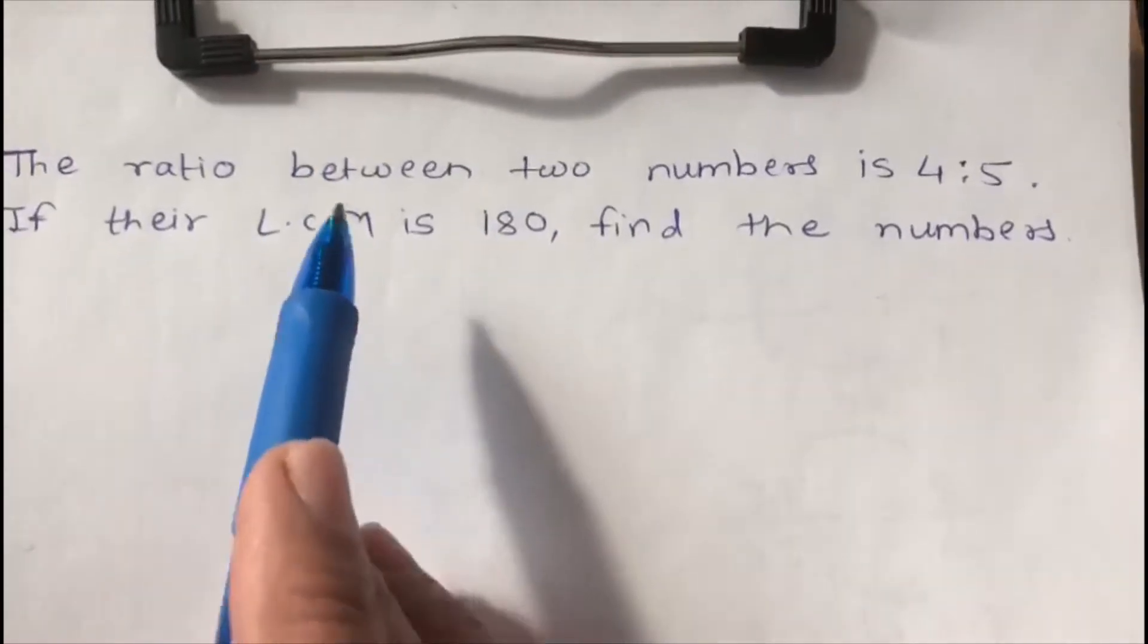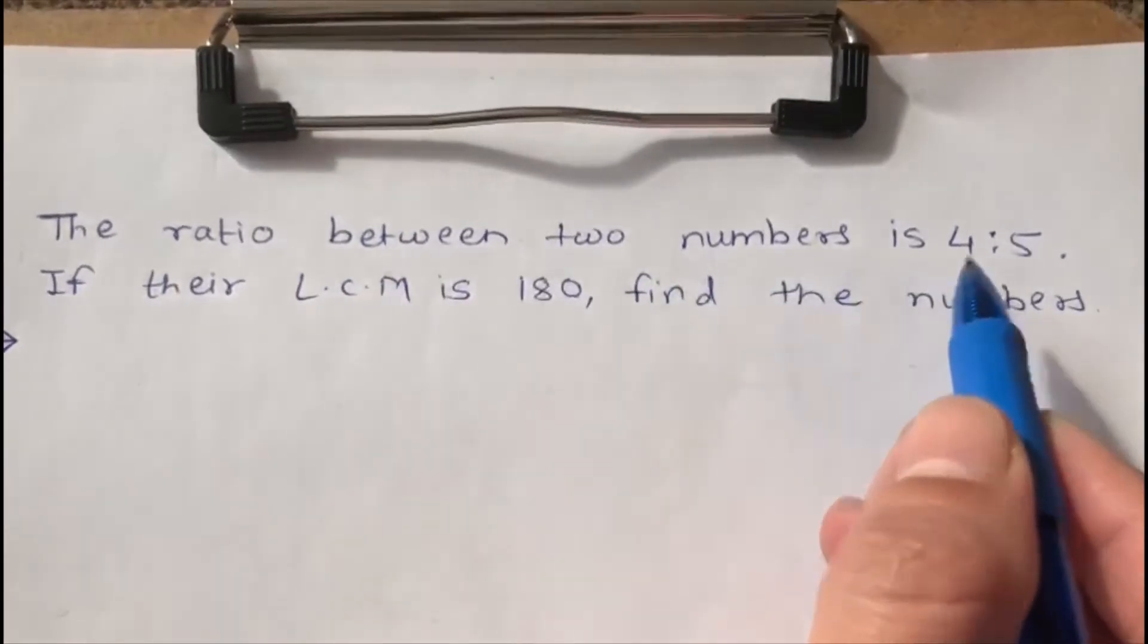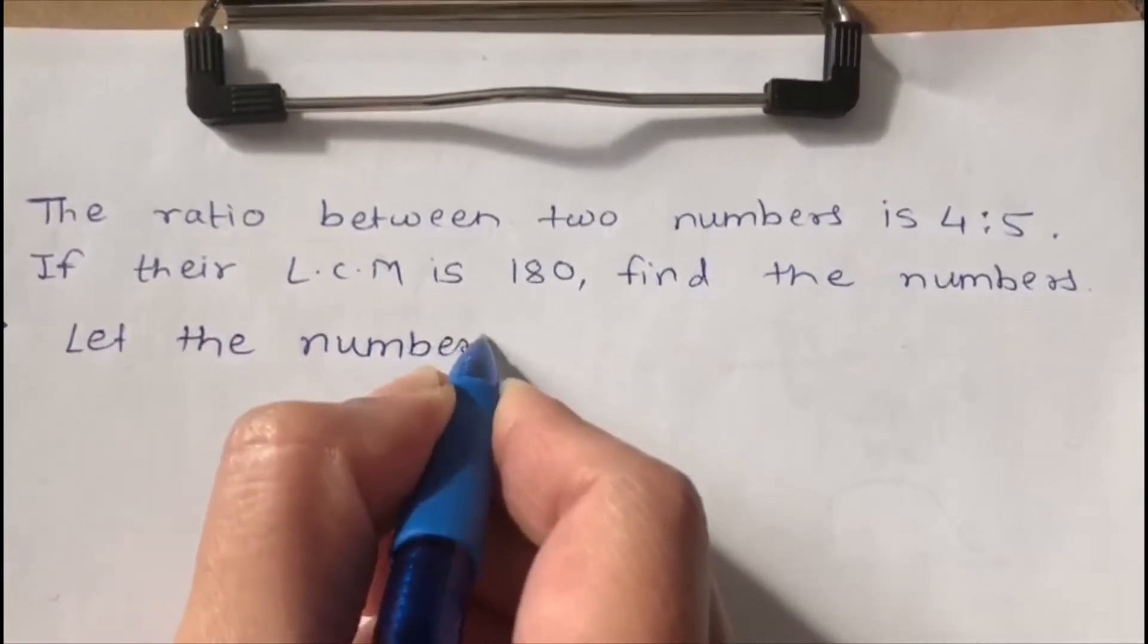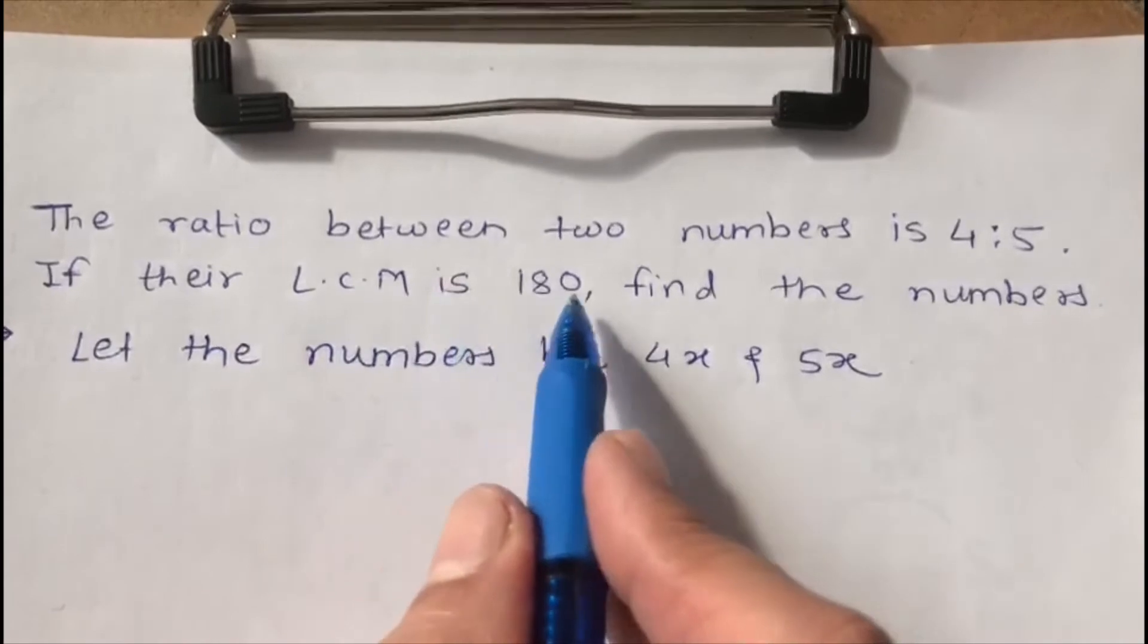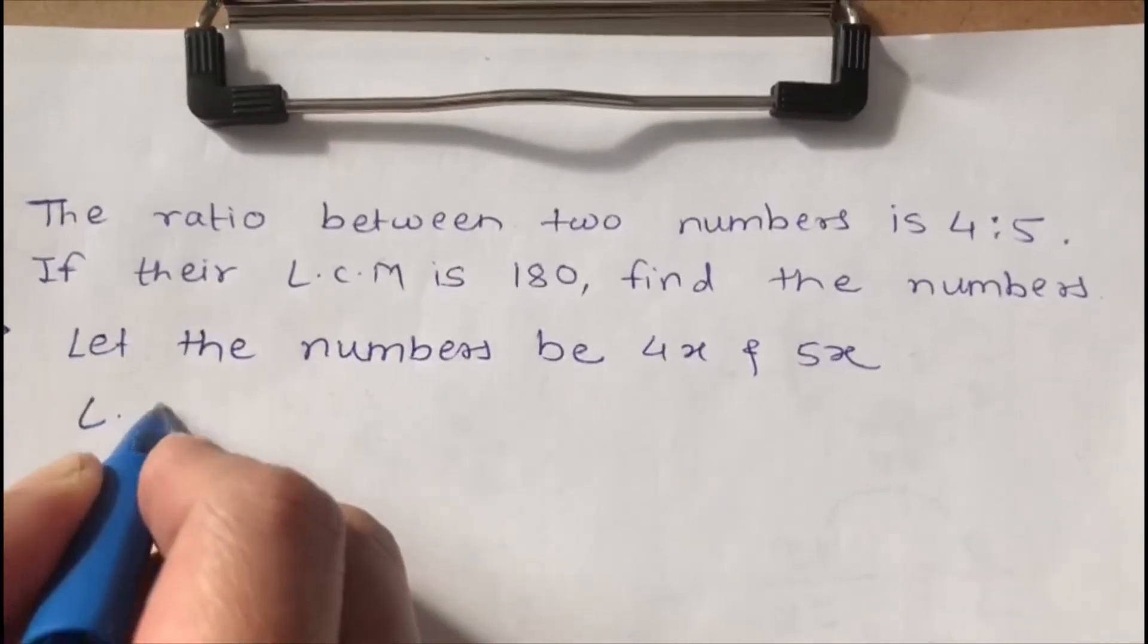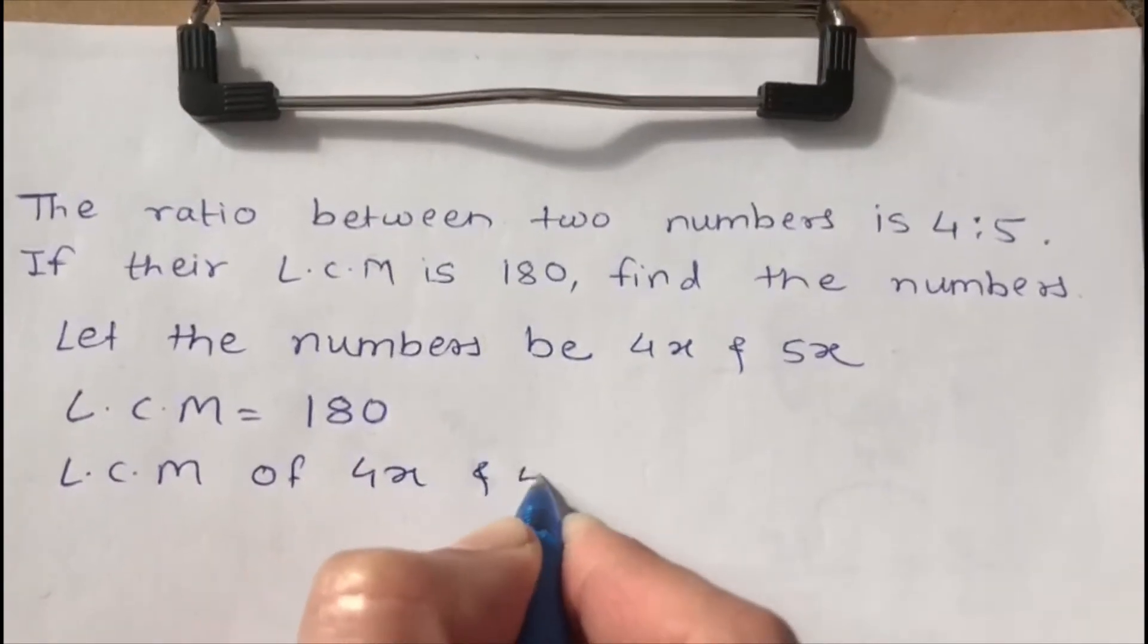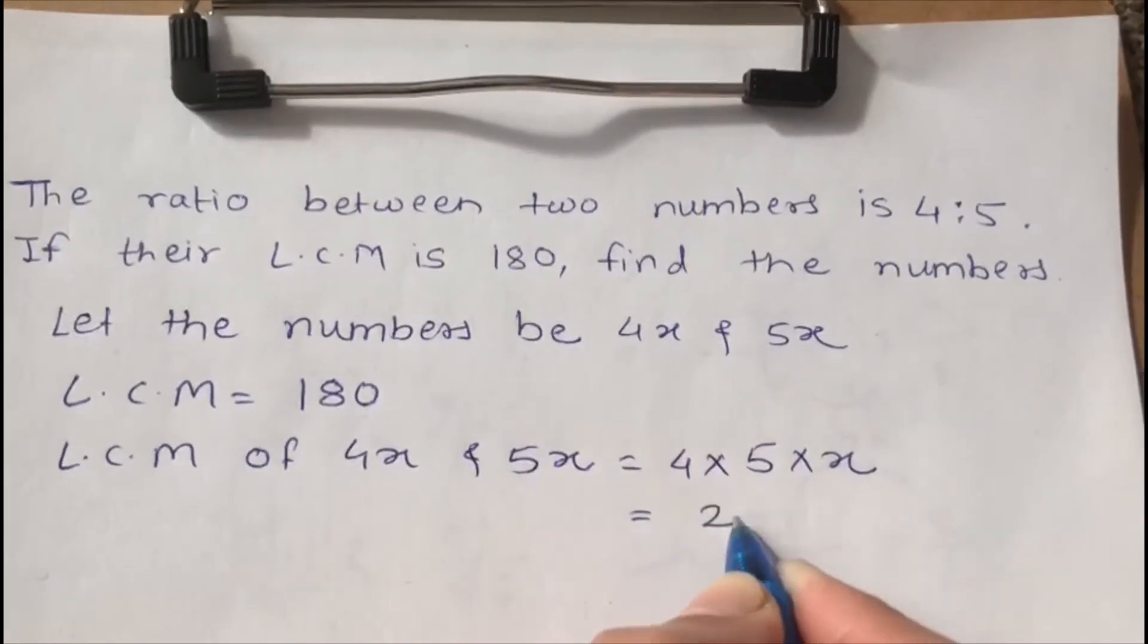So how to solve such type of problem? Let's see how to solve. If you see the ratio between two numbers is 4 is to 5, so let the numbers be 4x and 5x. Their LCM is given 180, so the LCM is 180, and the LCM of this 4x and 5x is 4 times 5 times x, that means 20x.